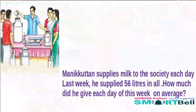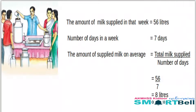First, everyone write this question in your notebook. The amount of milk supplied in that week is 56 liters, and the number of days in a week is 7. So the average amount of supplied milk equals total milk supplied divided by number of days — that is 56 divided by 7, which equals 8 liters.